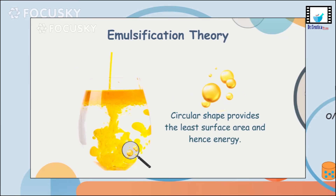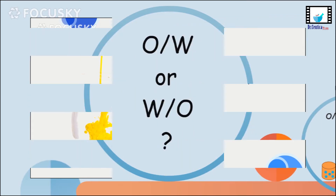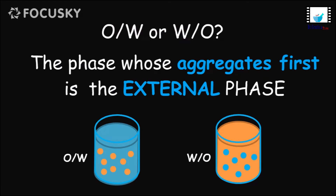This is mainly controlled by the stability of the droplets formed when the two components are mixed together. In our video on emulsification theory, we illustrated that upon addition of the two phases they acquire a spherical shape to reduce the interfacial tension and increase the stability of the system. The phase whose droplets aggregate first will become the continuous phase, and the droplets of the other phase will be dispersed throughout, forming the dispersed phase. If the water came together first, an oil-in-water emulsion will be formed, and if the opposite is true, a water-in-oil emulsion will be formed.